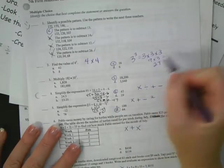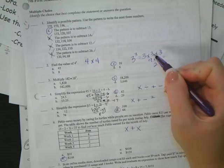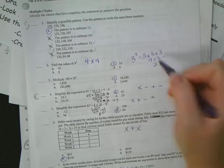Alright, number three, 182 times 10 squared. 10 squared is 10 times 10, which is 100. 100 times 182 is 18,200.